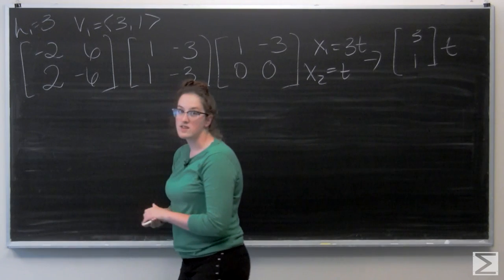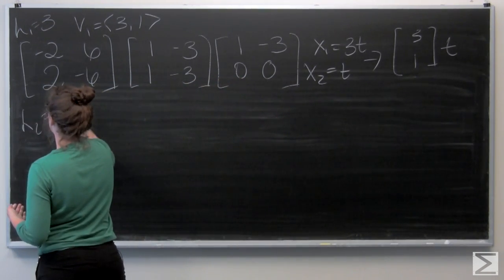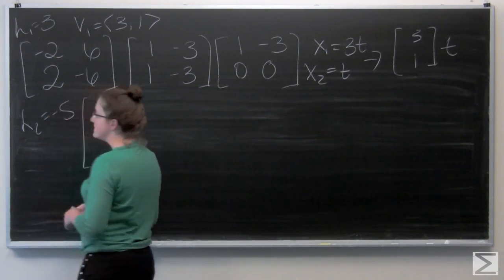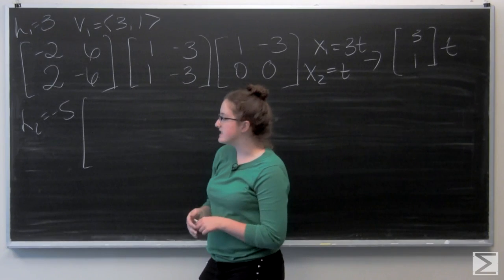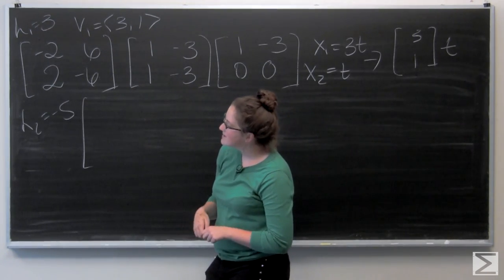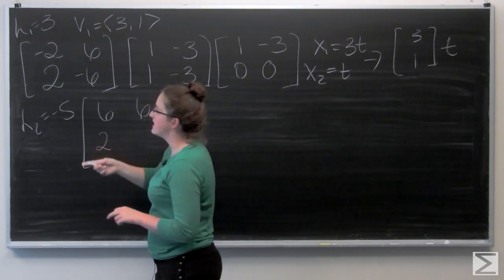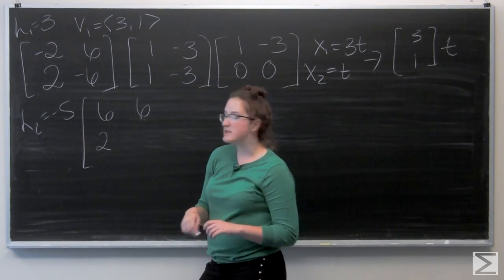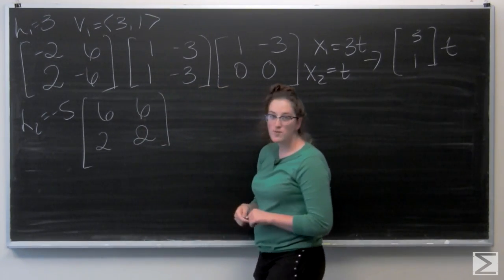Now let's find the vector for lambda 2, which is negative 5. So again, this time I'm going to add 5 along the main diagonal, subtracting a negative 5. So I have 1 plus 5 gives me 6. And negative 3 plus 5 gives me 2.